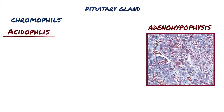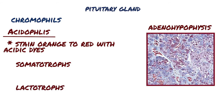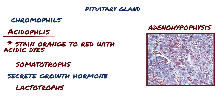Acidophils stain orange to red with acidic dyes, and acidophils consist of somatotrophs and lactotrophs. Somatotrophs secrete somatotropin, or growth hormone. They are stimulated by growth hormone-releasing hormone, and they are inhibited by somatostatin.